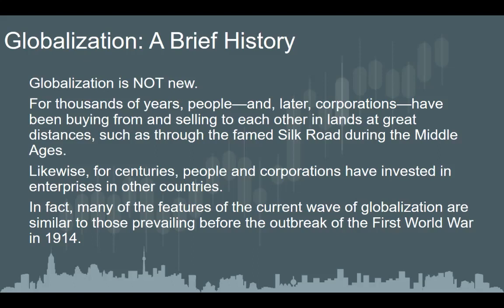For centuries, people and corporations have been investing in other lands, primarily for available resources — whether that was silks along the Silk Road, the slave trade going to Western Africa, or produce. When we look at South America, we think about the potato being exchanged and coming back to Europe. All of these are great examples of exchanges that occurred because of investment in these expansions around the world. In fact, many features of the current wave of globalization we're seeing because of the internet are similar to those that happened before the outbreak of the First World War in 1914.